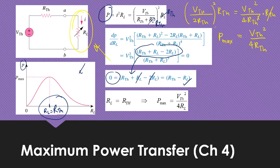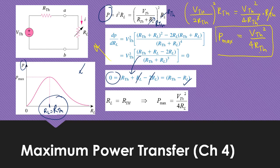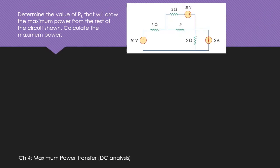Looking at the equation, this is the Thevenin voltage and this is the Thevenin resistance — these two are the important elements needed to find P maximum. P maximum equals VTH squared divided by 4RTH. This is the maximum power transfer formula for the DC case only; for AC we handle it differently. Let's proceed with the example.